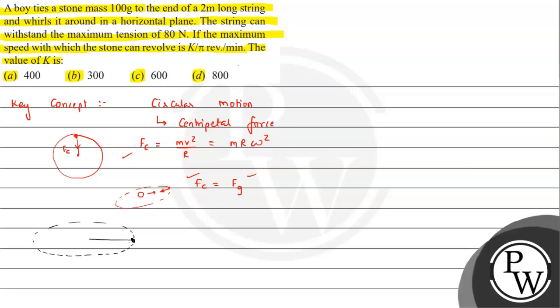From here, we can say the tension will be providing the centripetal force, that is mr omega square. Now, we are talking in omega terms because we basically need to find frequency - revolution per minute - we need to find frequency.